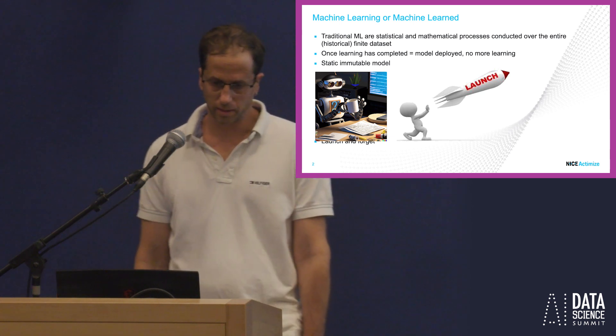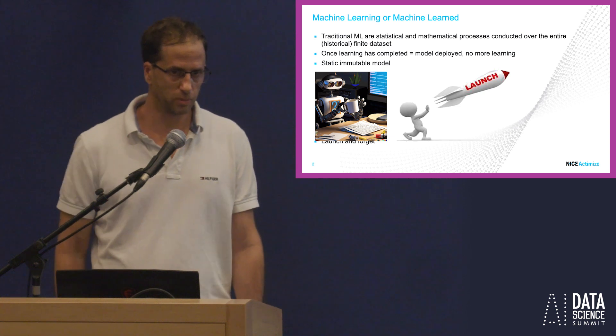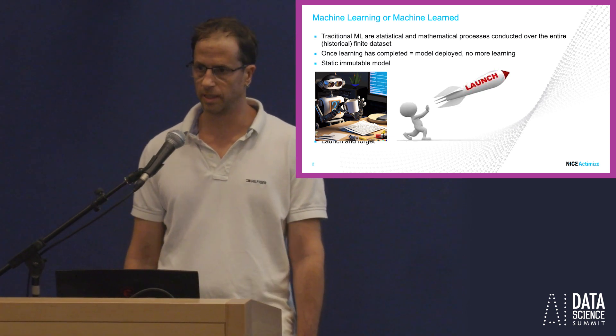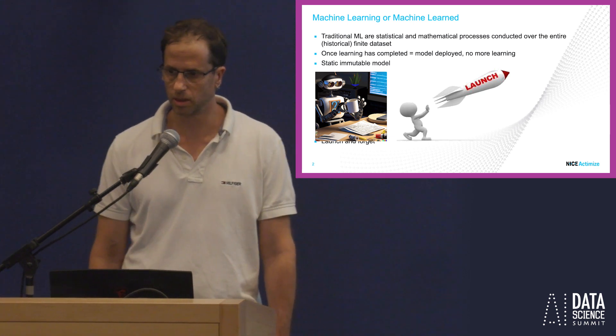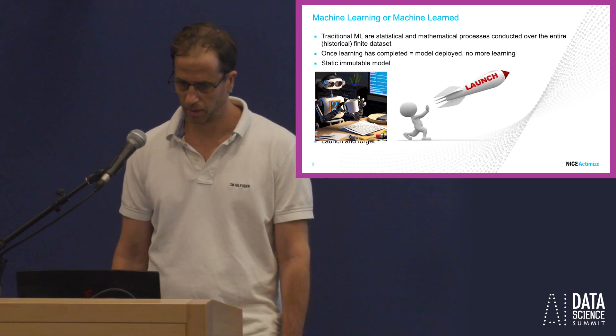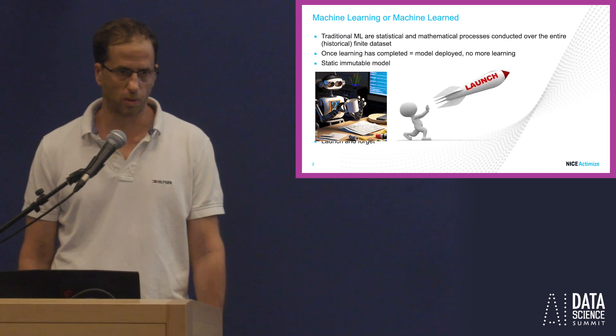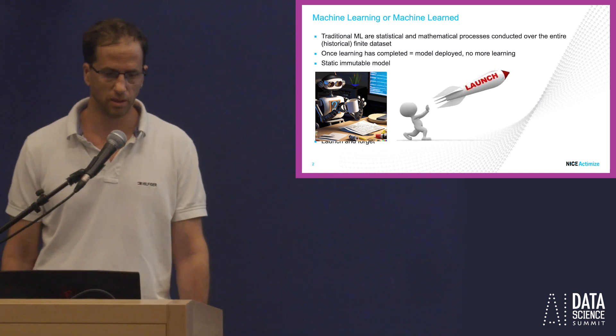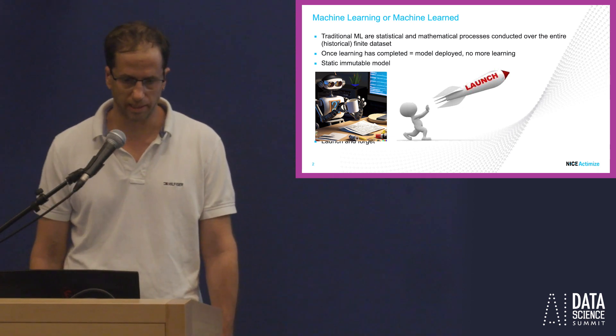So the traditional machine learning is basically, and we can argue later, is some manipulations. You give input and output and you tell the machine figure it out by yourself. But the problem is that once the learning is completed or basically once the model is deployed, no more learning is occurring.